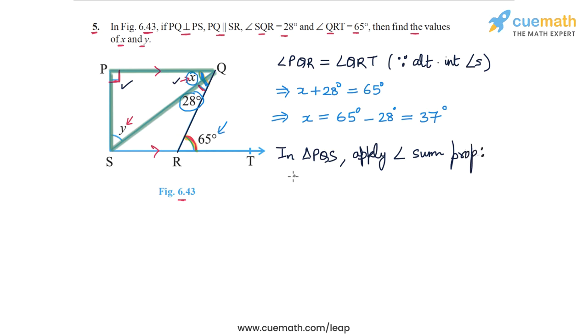So the sum of the three angles: angle P plus the angle at Q, which is angle PQS, and the angle at S, which is angle PSQ, the sum of these three should be 180 degrees. Now angle P, this angle is 90 degrees.